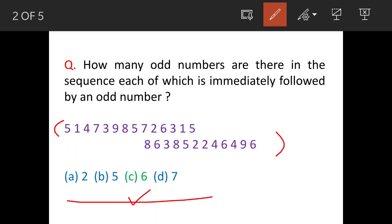Let's understand the question. We know that 5 and 1 are examples of odd numbers. I'll give you one example here: 5 and 1, this is one pair. Likewise, how many such numbers are there in these two sequences? This is the question.